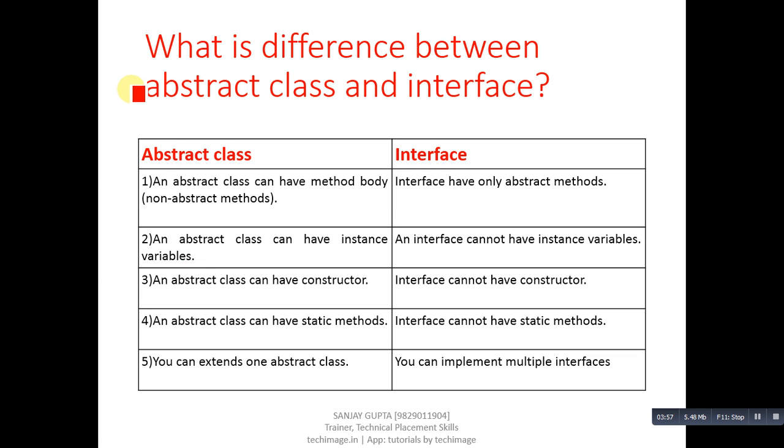Next question, what is difference between abstract class and interface? So there are total five differences. First is, an abstract class can have method body, whereas interface have only abstract methods. Second, an abstract class can have instance variables, whereas an interface cannot have instance variables.